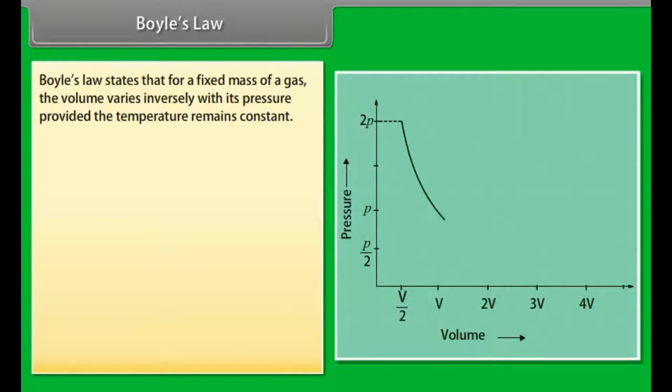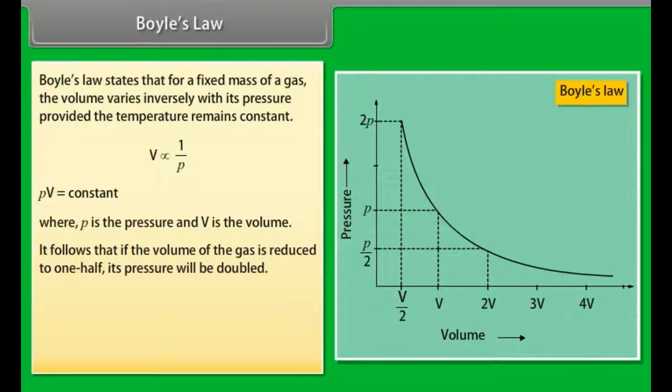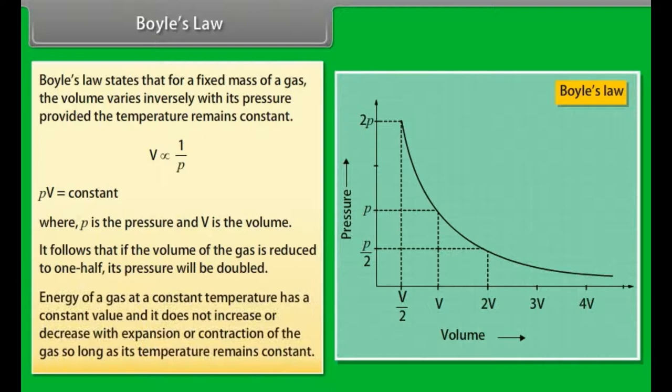Boyle's law states that for a fixed mass of a gas, the volume varies inversely with its pressure provided the temperature remains constant. PV equals constant, where P is the pressure and V is the volume. It follows that if volume of the gas is reduced to one half, its pressure will be doubled. Energy of a gas at constant temperature has a constant value and does not increase or decrease with expansion or contraction of the gas so long as its temperature remains constant.